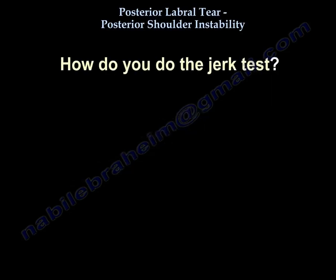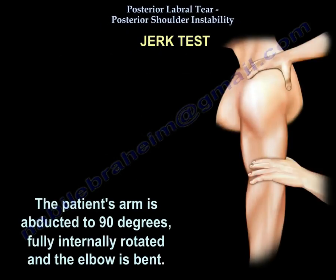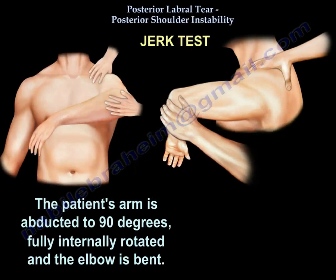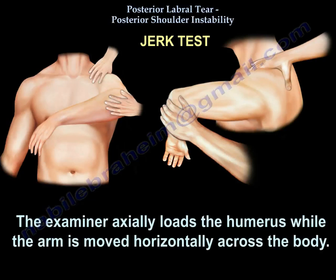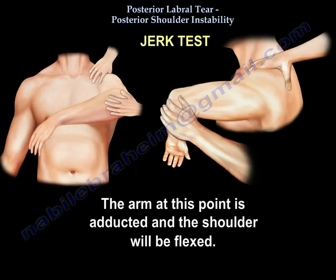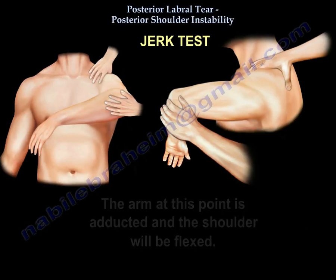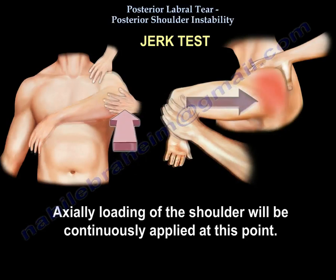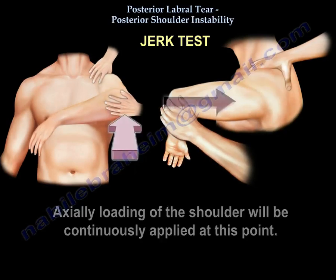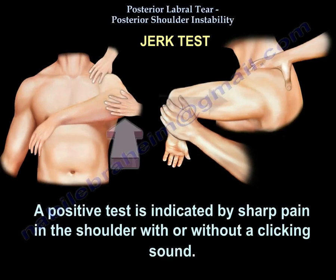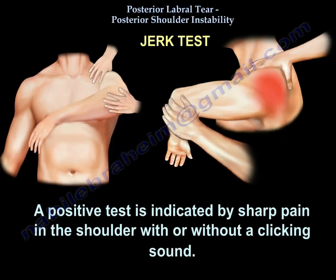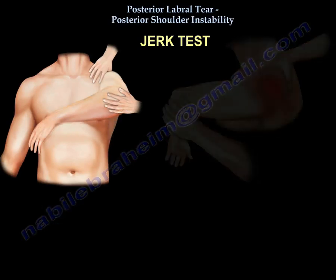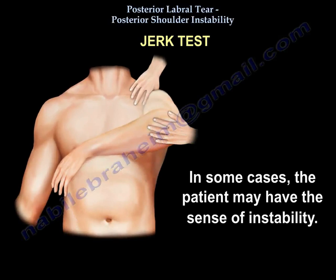How do you do the jerk test? The patient's arm is abducted to 90 degrees, fully internally rotated, and the elbow is bent. The examiner axially loads the humerus while the arm is moved horizontally across the body. The arm is adducted and the shoulder will be flexed. Axial loading of the shoulder is continuously applied. A positive test is indicated by sharp pain in the shoulder with or without a click sound. In some cases, the patient may have a sense of instability.